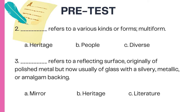Number three refers to a reflecting surface, originally of polished metal, but now usually of glass with a silvery, metallic, or amalgam backing.